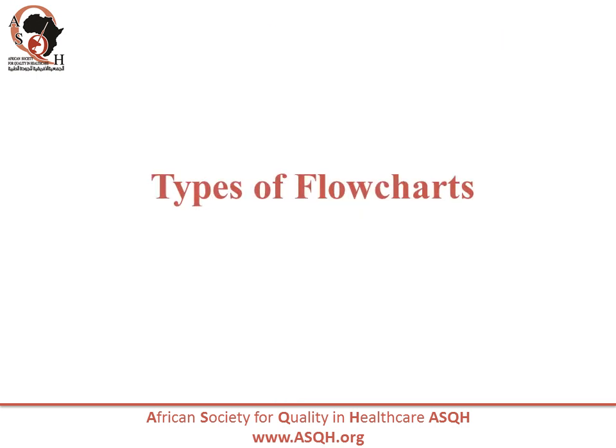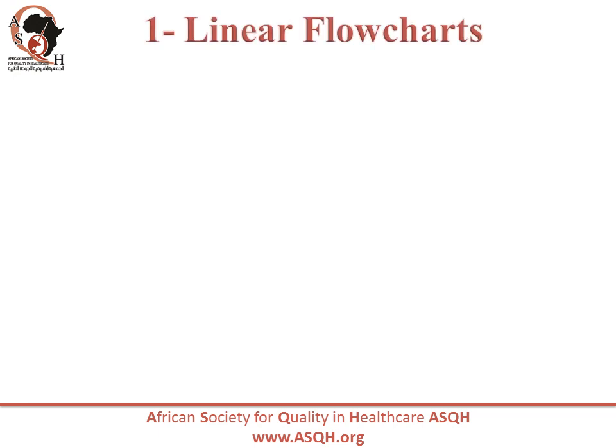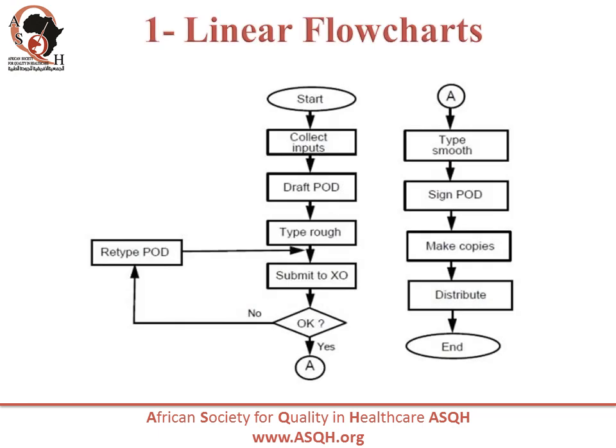Types of flowcharts. First type: Linear Flowchart. A linear flowchart is a diagram that displays the sequence of work steps that make up a process. This tool can help identify rework and redundant or unnecessary steps within a process.